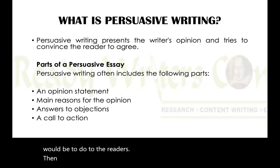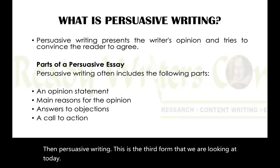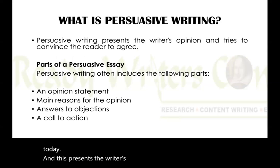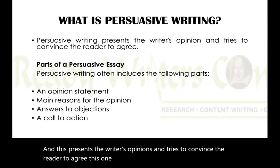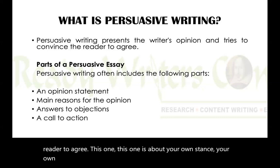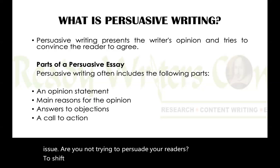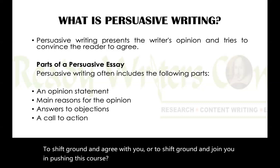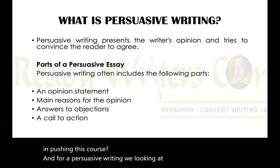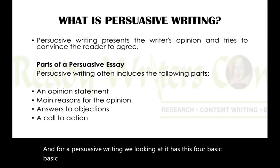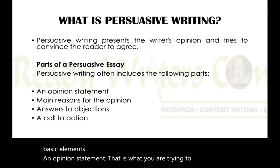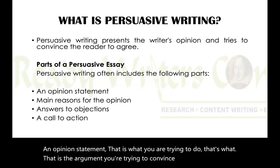Then, persuasive writing — the third form we are looking at today. This presents the writer's opinions and tries to convince the reader to agree. This one is about your own stance, your own opinion, your own perception and interpretation of an issue. You are trying to persuade your readers to shift ground and agree with you, or to join you in pushing a course. Persuasive writing has four basic elements, starting with an opinion statement.